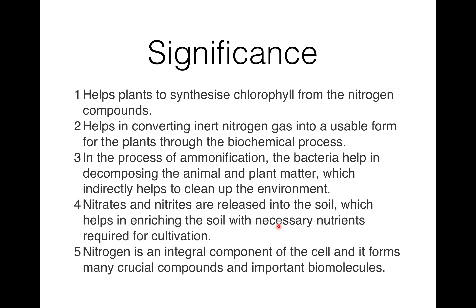What are the significances of the nitrogen cycle? The nitrogen cycle helps plants to synthesize chlorophyll from nitrogen compounds. The cycling of nitrogen through the ecosystem is crucial for maintaining a productive and healthy ecosystem, with neither too much nor too little nitrogen. It helps in converting inert nitrogen gas into a usable form for plants through biochemical processes. In ammonification, bacteria help in decomposing animal and plant matter, which indirectly helps to clean up the environment. Nitrites and nitrates released into the soil help in enriching the soil with necessary nutrients required for cultivation.